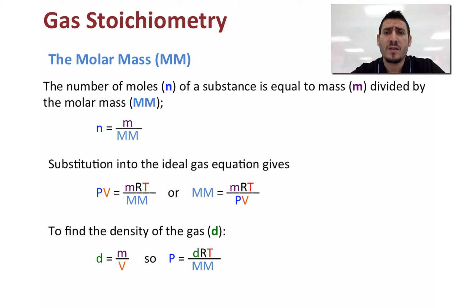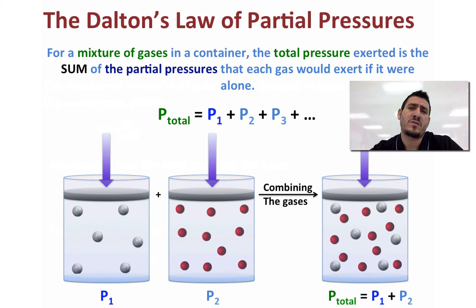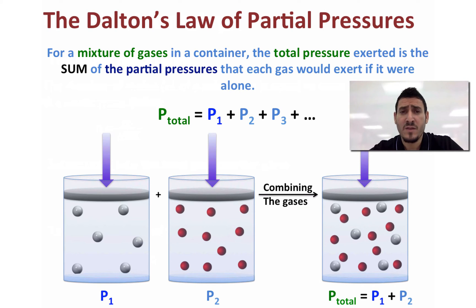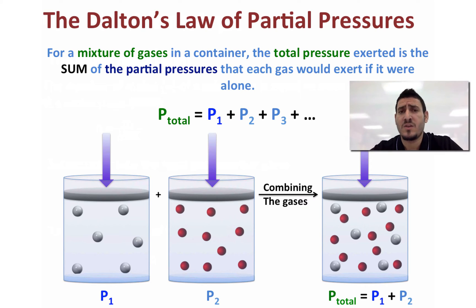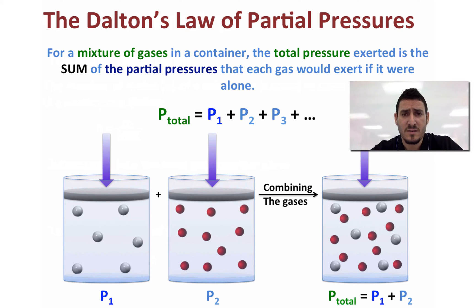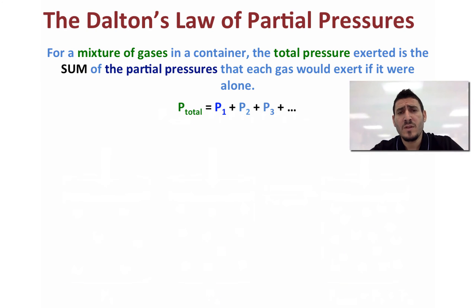Now let's discuss Dalton's law of partial pressures. Dalton stated that for a mixture of gases in a container, the total pressure equals the sum of the partial pressures of the individual gases, as if each were alone in the container. So P_total equals P1 plus P2 plus P3, and so on, depending on how many gases are mixed. P1 and P2 are called the partial pressures of the individual gases.